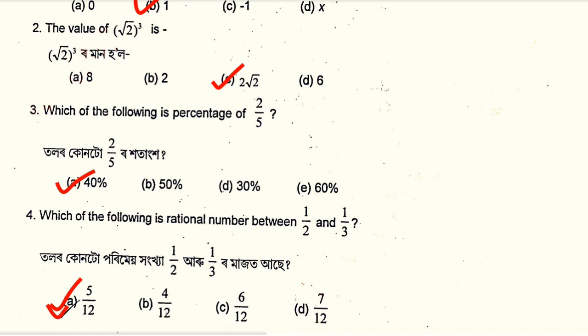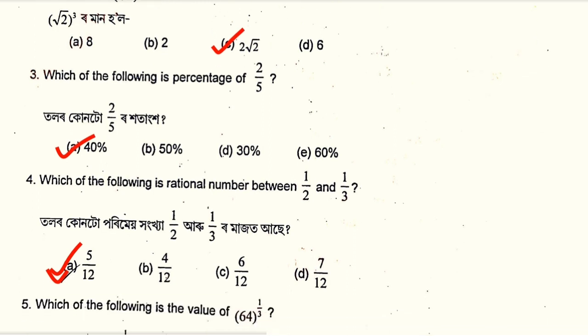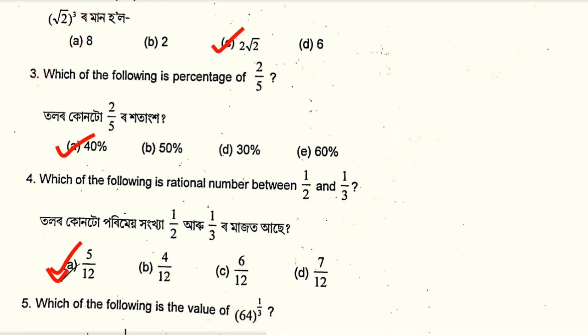If we multiply 2/5 by 100, we get 40%. If we take the two numbers, we get 16%. Which of the following is a rational number between 1/2 and 1/3?